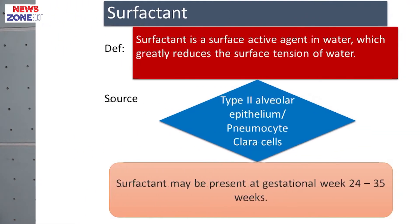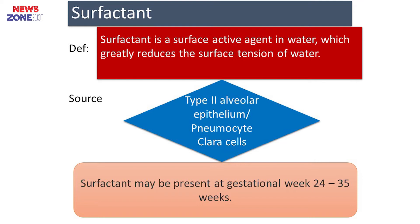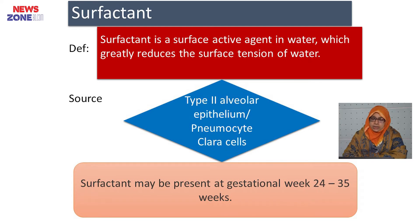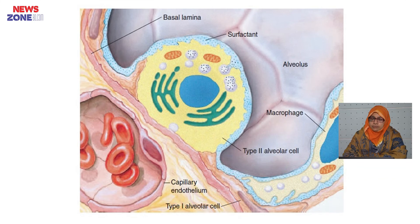First, let us know what is a surfactant. Surfactant is a surface active agent in water which greatly reduces the surface tension of water. Its source is usually the type 2 alveolar epithelial cell, pneumocyte, or clara cell. Surfactant may be present at gestational age of 24 to 35 weeks. In the figure you can see the type 2 alveolar epithelial cell and the surfactant that lines the alveoli.